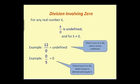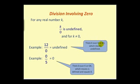Let's look at division involving zero. For any real number k, k divided by 0 is undefined. For example, 12 divided by 0 is undefined. A memory trick: think of k over 0 as "KO" — like a knockout in boxing — which means undefined. For 0 divided by 5, think of 0 over k as "OK," meaning we can perform this division: it is defined and equals 0.